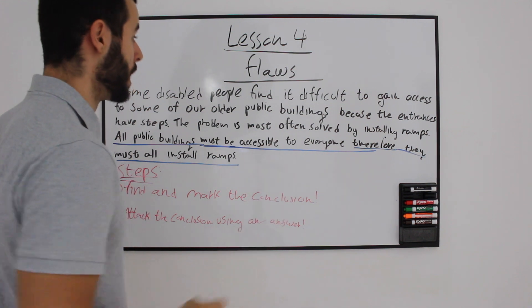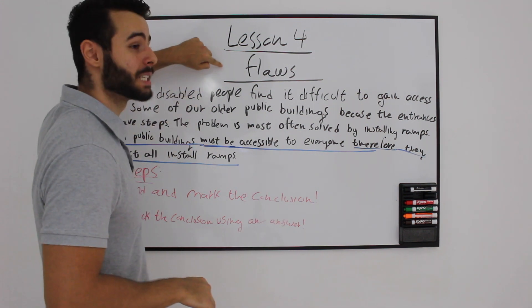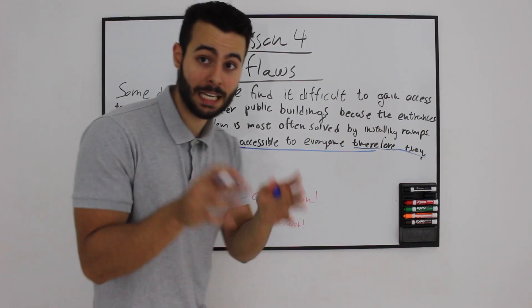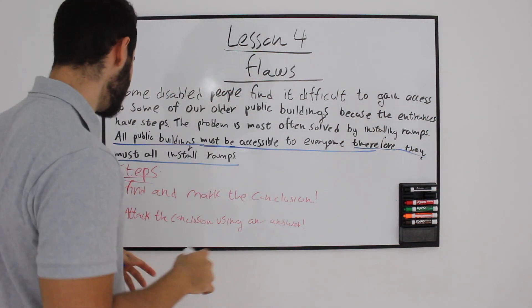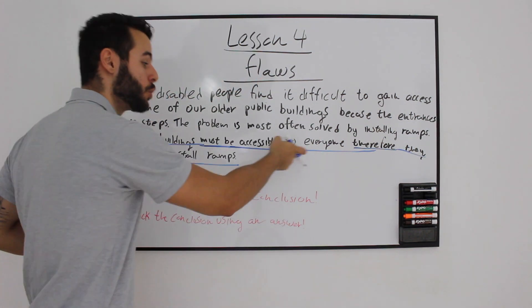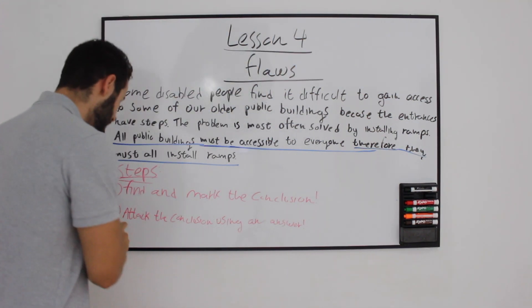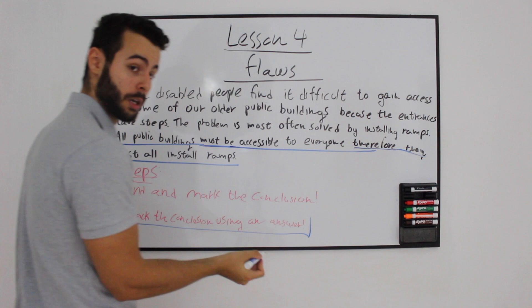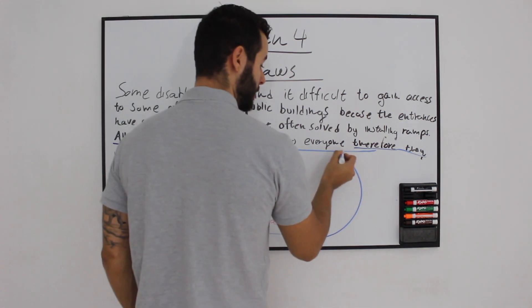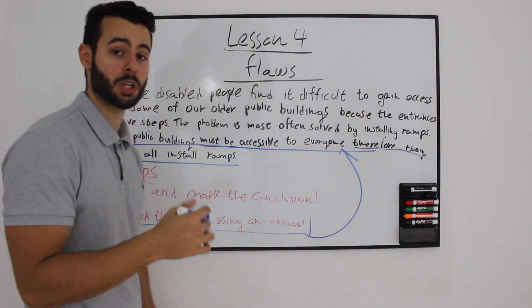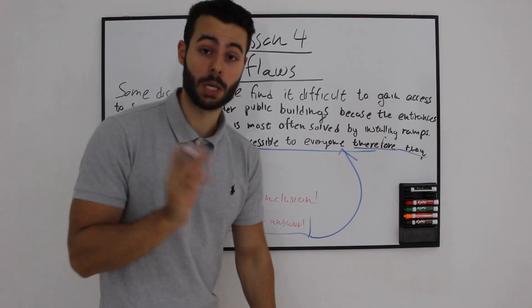Let's go to step two, which is when you have a flaw, identify the flaw. You are going to take each statement from the answer, and you are actually going to attack the conclusion. What do I mean by attack? To ask yourself, if the answer is correct, does it weaken the actual conclusion we've just found? Let's try to do it.